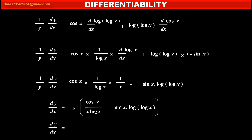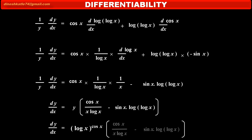Shifting y from the left hand side to the right hand side, dy/dx = y · [cos x/(x log x) − sin x · log(log x)]. Substituting the value of y = (log x)^(cos x), the final answer is: dy/dx = (log x)^(cos x) · [cos x/(x log x) − sin x · log(log x)].